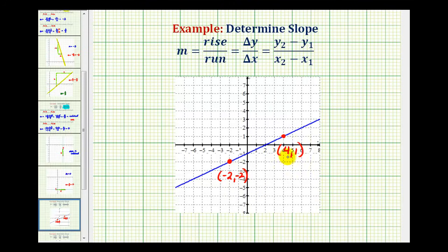So if we wanted to, we could take these two points and then use the slope formula given here, or we can just analyze the vertical change and horizontal change from this point to this point. Notice if we wanted to move from this point to this point, we'd have to move up three units and right six units.